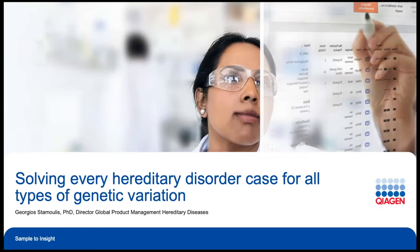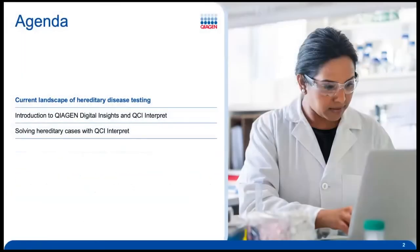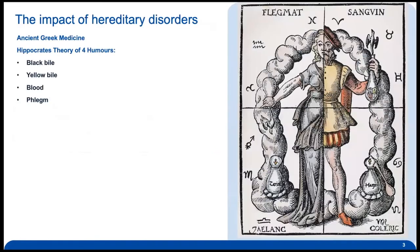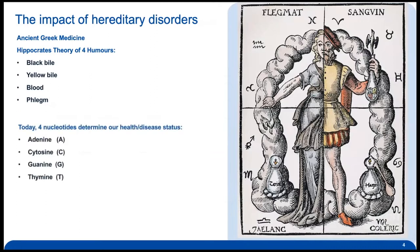Today I'll try to give you a good overview of how someone can solve every hereditary disorder case for different types of genetic variation including CNVs by using the QCI Interpret platform. I will start with a quick introduction on the current landscape of hereditary disease testing. As the father of medicine, Hippocrates had the theory of four humours. Nowadays we have the four nucleotides which determine our health or disease status, and it's extremely important to decode any genetic variation with proper, accurate, and fast interpretation workflows in order to give answers to complex hereditary disorder cases.